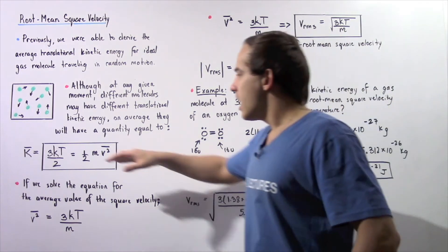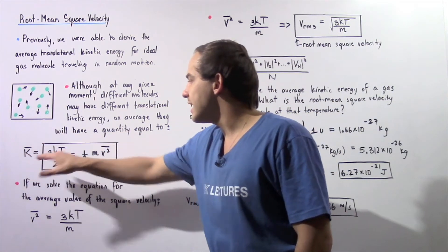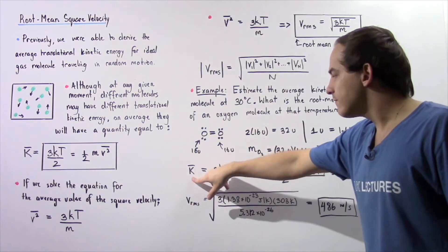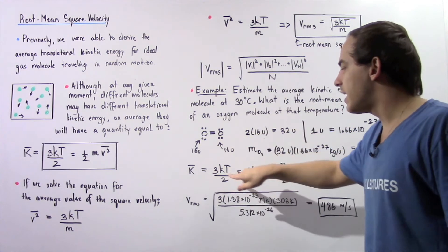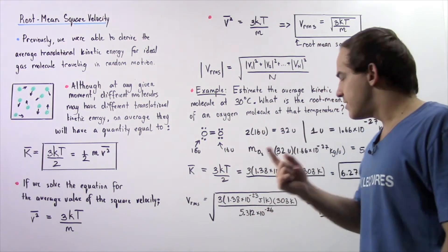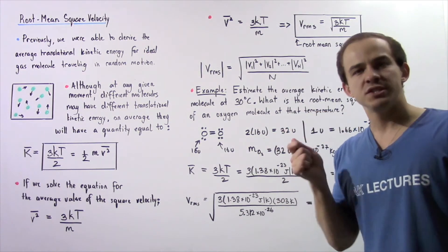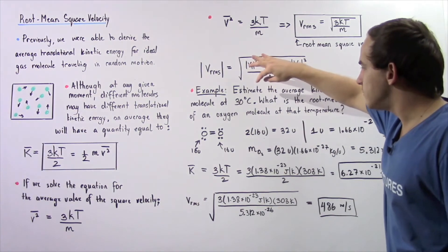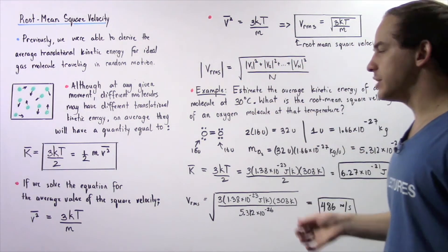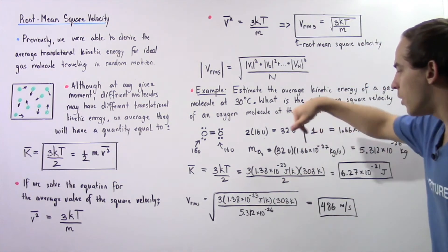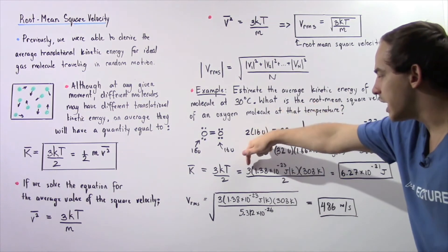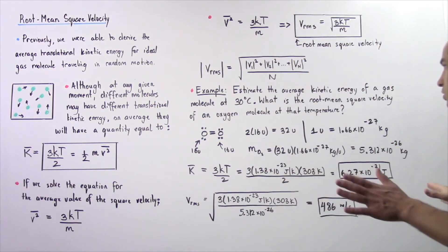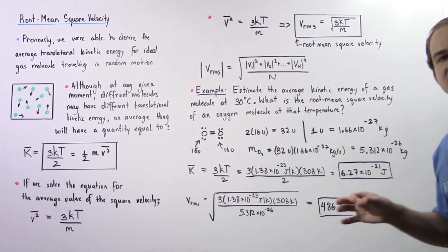Let's begin by calculating the average translational kinetic energy of any molecule at this temperature. Using the equation, average KE equals 3 times k times T divided by 2, where k is the Boltzmann constant equal to 1.38 times 10 to the negative 23 joules per Kelvin. The temperature must be in Kelvin, so we add 273 to 30 degrees Celsius to get 303 Kelvin. Substituting: 303 Kelvin times the Boltzmann constant times 3 divided by 2 gives an average translational kinetic energy of 6.27 times 10 to the negative 21 joules.